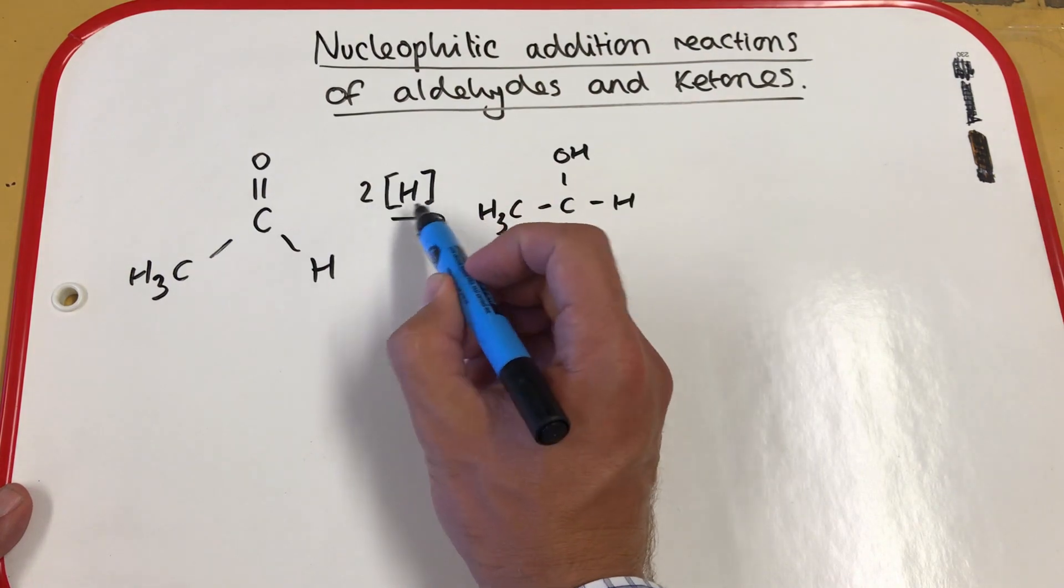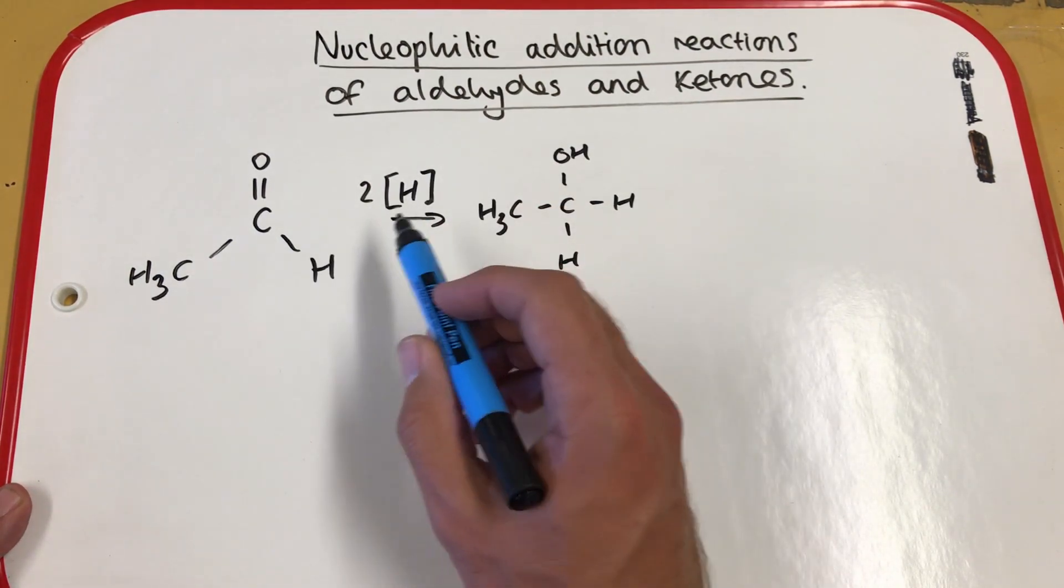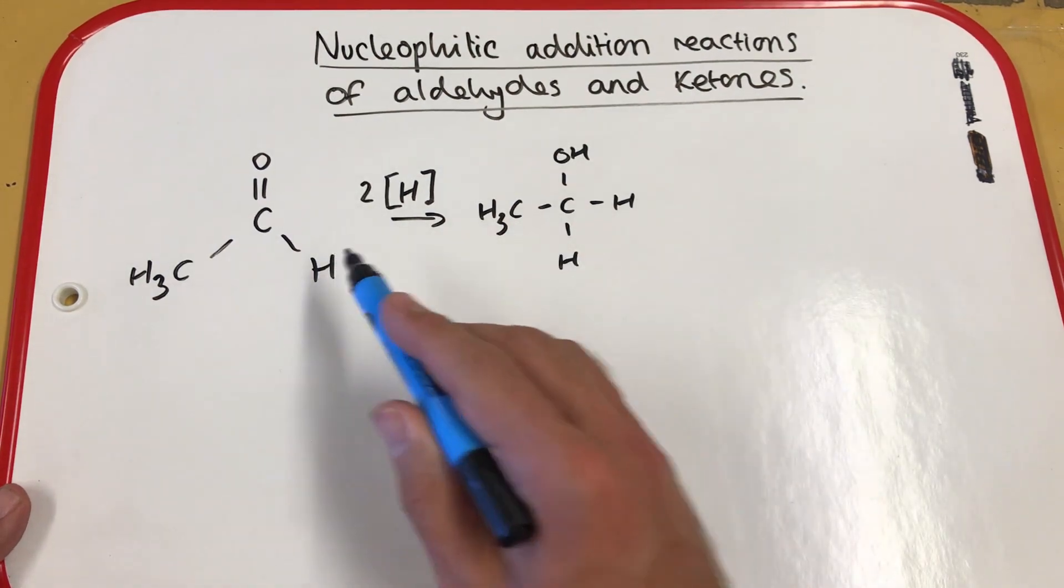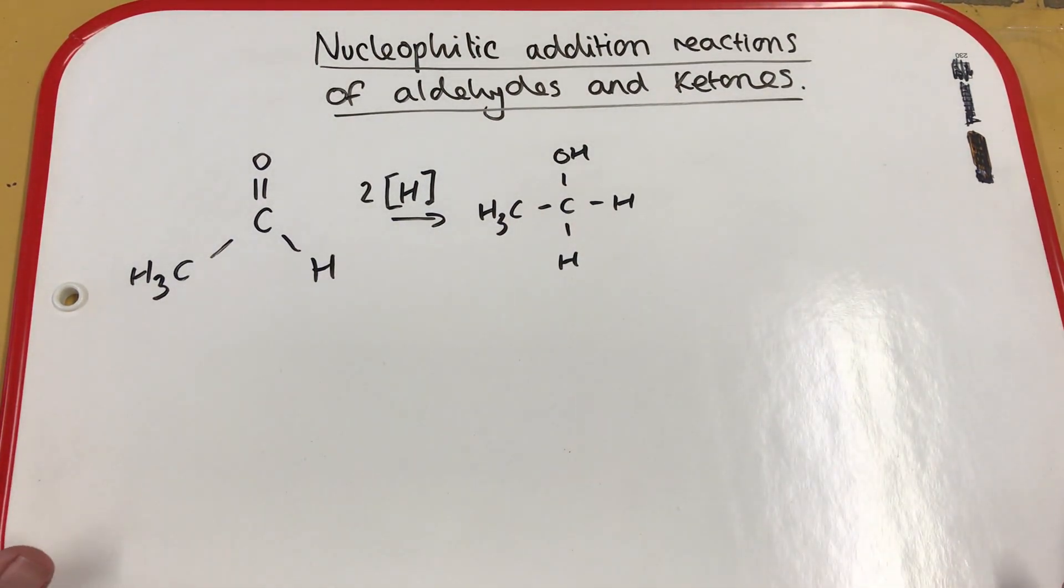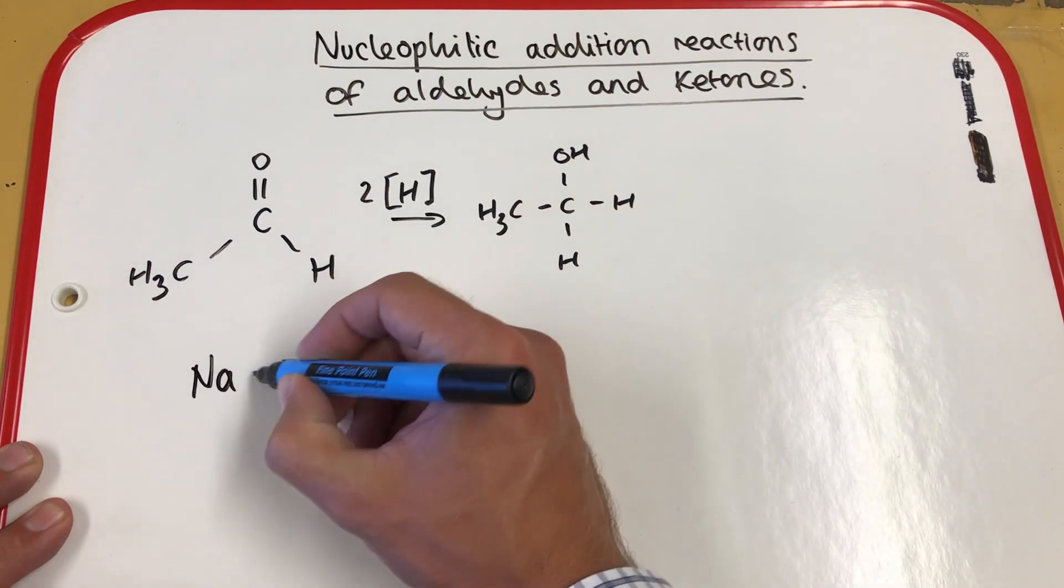Here, we have our reducing agent. We can represent our reducing agent in a simple equation to identify exactly what is happening, but this doesn't give us the full picture. This reducing agent that we're going to use is NABH4.